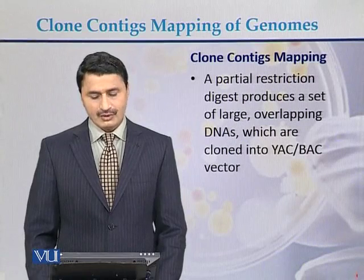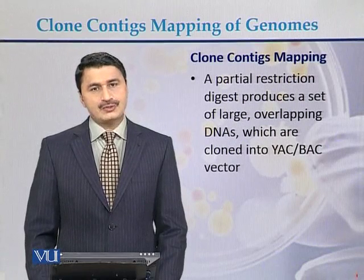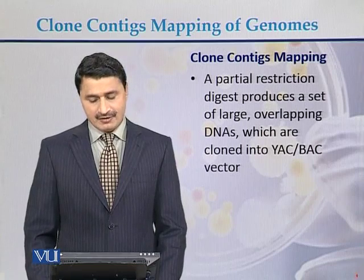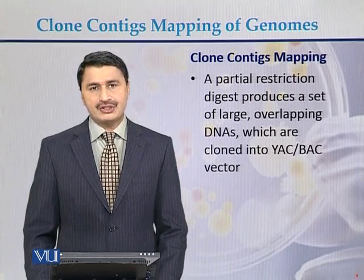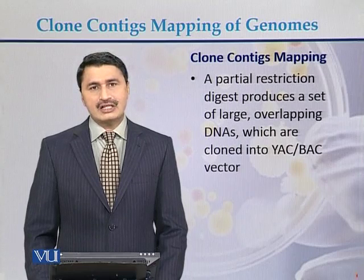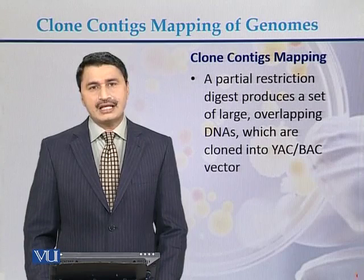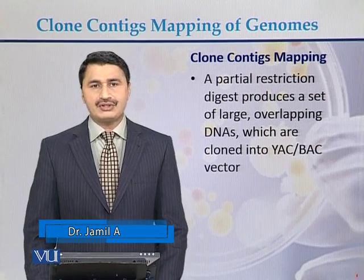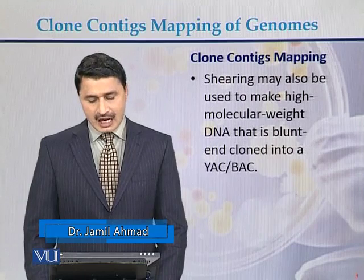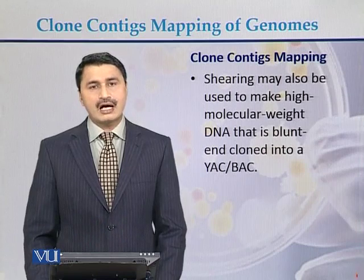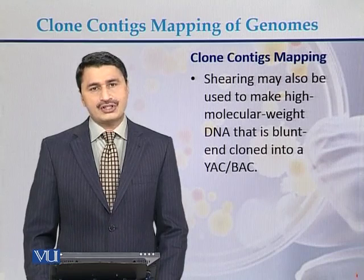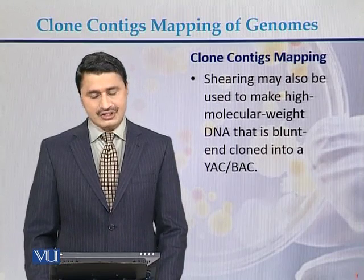Clone Contig Mapping of Genomes: A partial restriction digest produces a set of large overlapping DNA fragments which are cloned into yeast artificial chromosomes (YAC) or bacterial artificial chromosomes (BAC). Shearing may also be used to make high molecular weight blunt-ended DNA that is cloned into the YAC or BAC. So it can be done with the help of restriction enzymes or just by shearing the DNA.